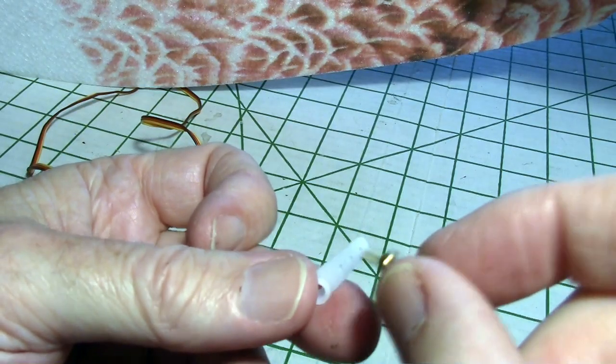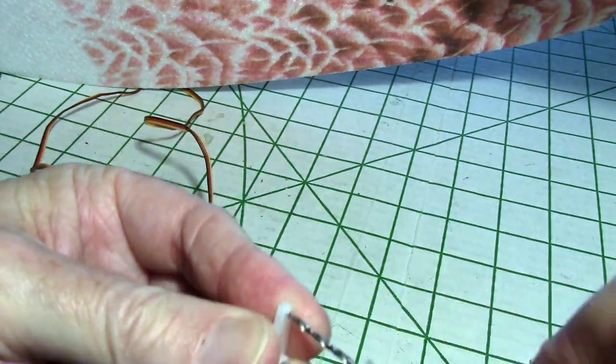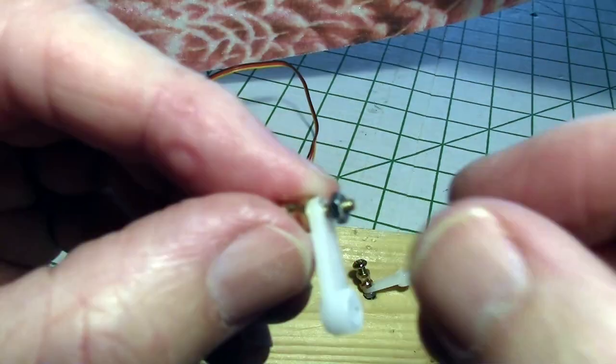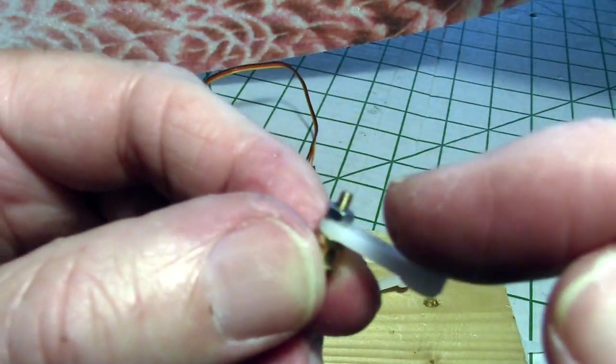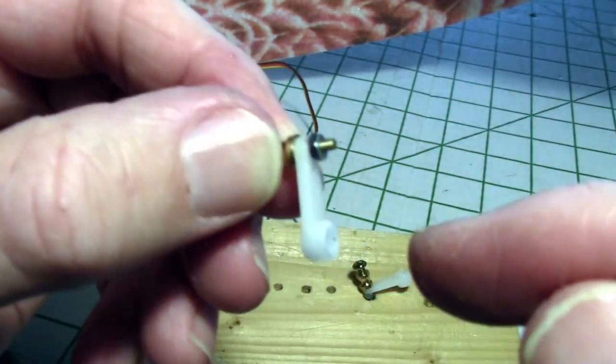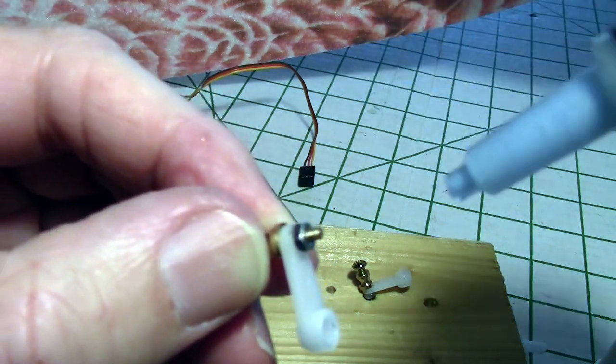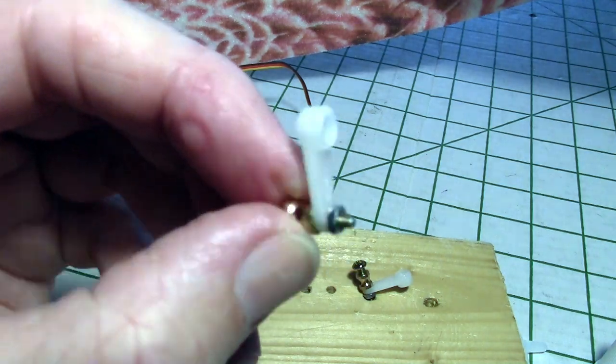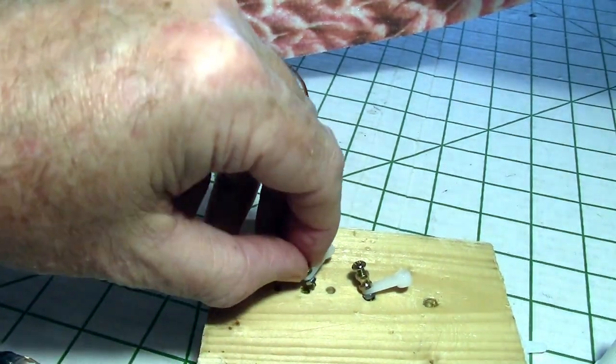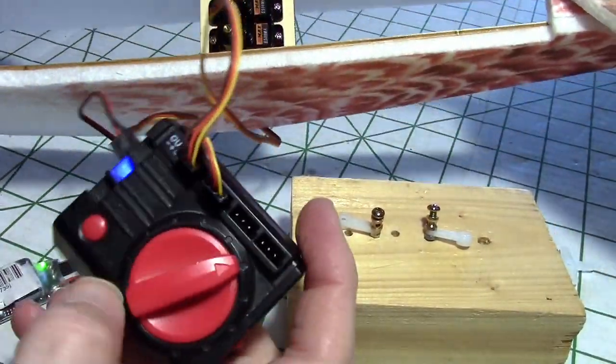Next, we need to drill out the holes on the servo arms to accept these servo rod keepers. I'm going to take my drill bit and drill out the hole. Now I'm just screwing the nut onto the keeper. Make sure the threaded part is facing towards the big part on the servo arm, which goes onto the servo. Now I'm just going to put a tiny bit of blue Loctite on there. I don't want to get any on the plastic because it might dissolve the plastic. Now we'll just let it set up.